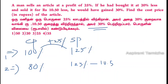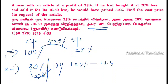I want the 30% profit. So 80% of the cost price with 30% profit gives 104%. One hundred and four percentage is the selling price. So the real selling price is 104%.